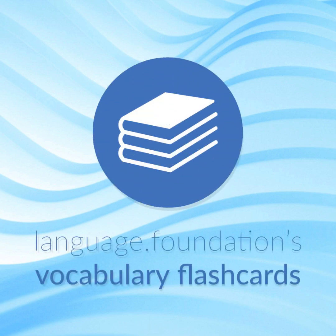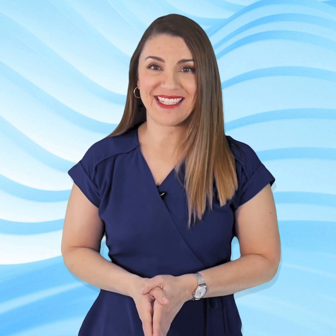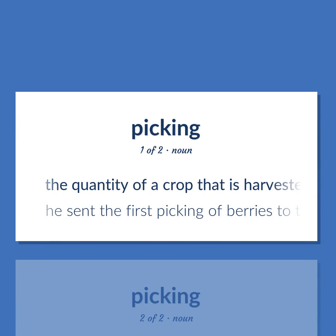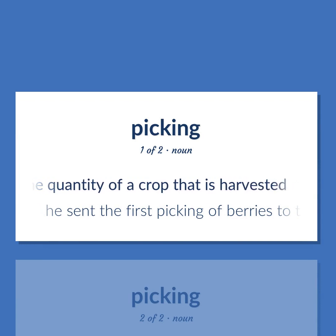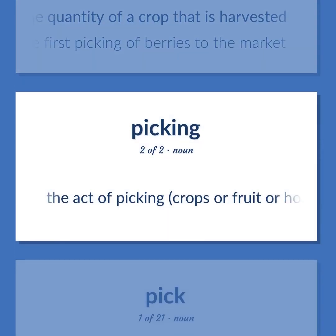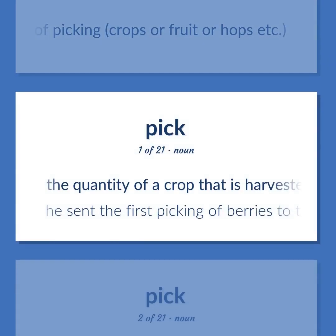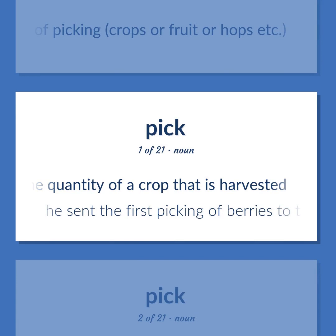Language Foundations Vocabulary Flashcards — helping you achieve understanding. Picking: the quantity of a crop that is harvested. Example: 'He sent the first picking of berries to the market.' The act of picking crops, fruit, hops, etc. The quantity of a crop that is harvested. 'He sent the first picking of berries to the market.'